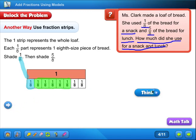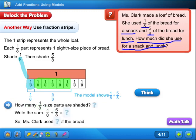Alright. One eighth was her snack. Five eighths was the lunch. So, you're going to add it together. Remember, when your bottoms are the same, you add your tops. So, eight and eight, the denominators are the same. So, now you're just going to add the tops. One plus five is six. So, how many one-eighth size parts are shaded? Six. Write the sum of one-eighth plus five-eighths, which is six-eighths. So, Ms. Clark used six-eighths of the bread.